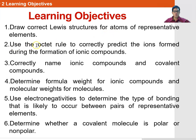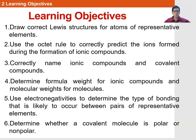You need to know what we call the octet rule to correctly predict the ions formed during the formation of ionic compounds, name the ionic compounds and covalent compounds, determine the formula weights of ionic compounds and molecular weights. In Part 2, you'll learn about the use of electronegativities to determine the type of bonding likely to occur between representative elements, and determine whether a covalent molecule is polar or non-polar.